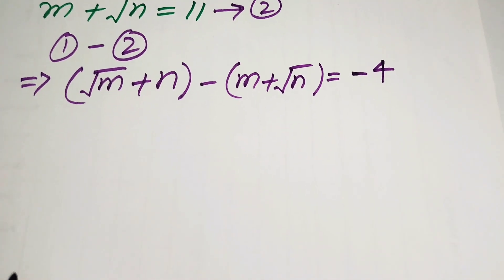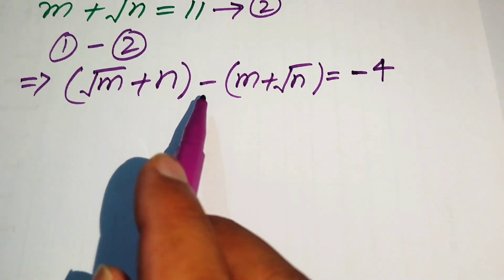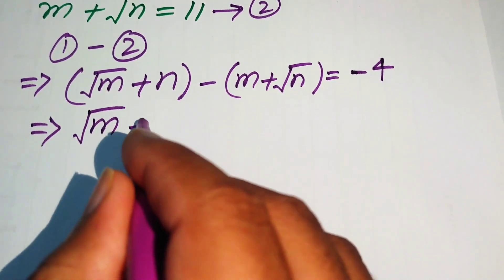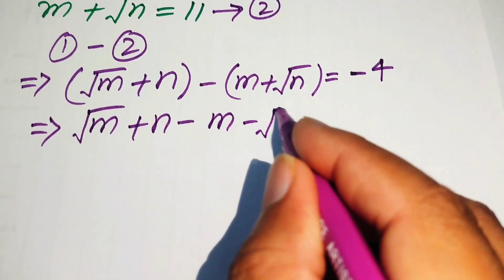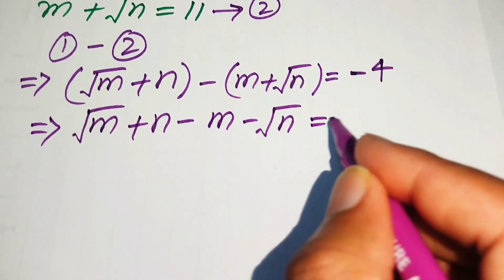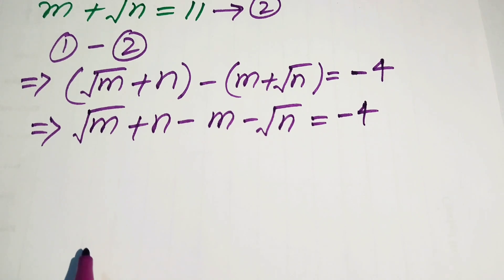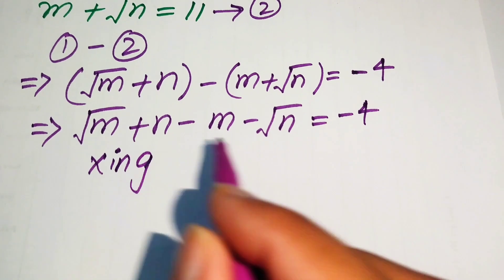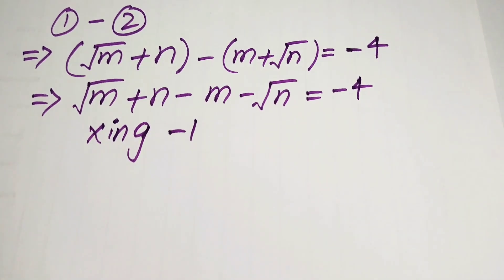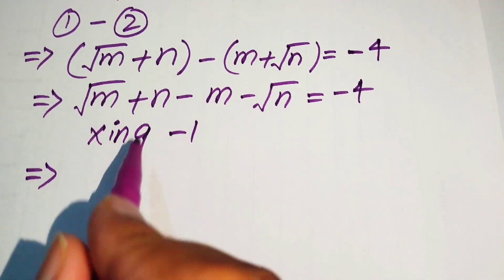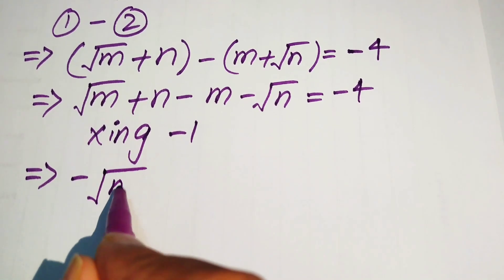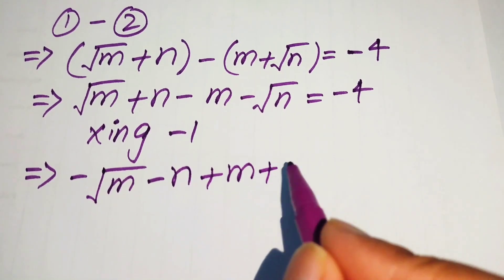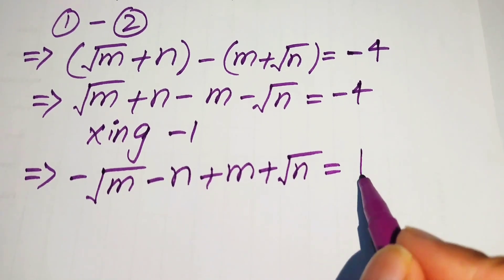We simplify by distributing the minus sign, giving: square root of m plus n, minus m, minus square root of n equals minus 4. Then we multiply both sides by minus 1 to get: minus square root of m minus n plus m plus square root of n equals 4.